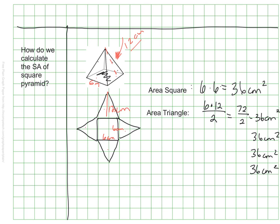So once I know all of the area of all of my surfaces, I simply need to add it together to find the total surface area. So here we know that the surface area of this square pyramid is 180 square centimeters.